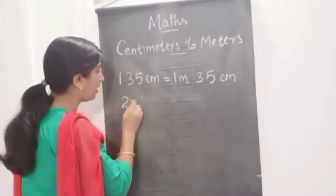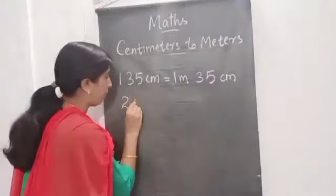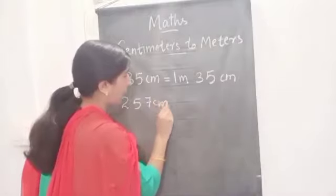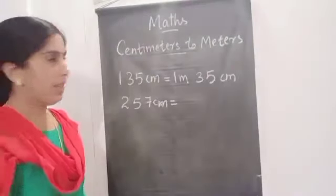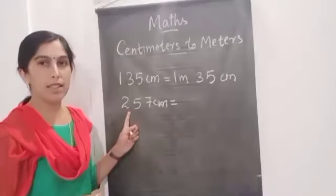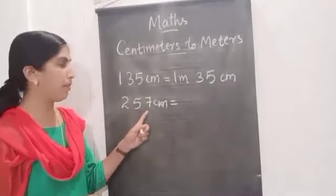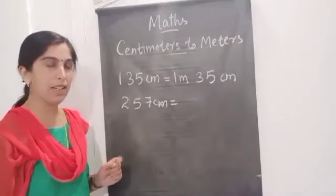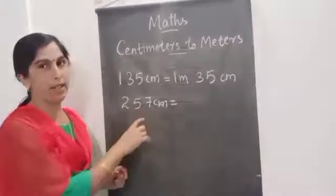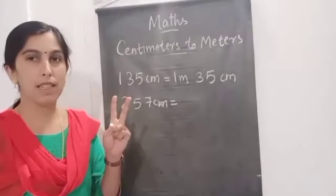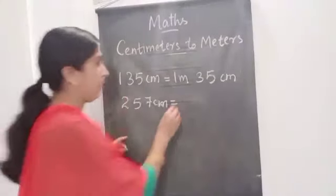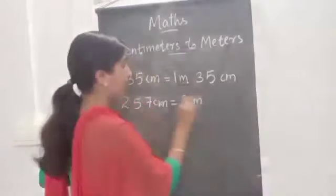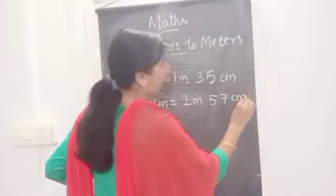Two hundred and fifty-seven centimeters. In this centimeter, how many meters and how many centimeters can you say, children? Two hundred and fifty-seven — so two hundred is two meters. Two meters and fifty-seven centimeters.